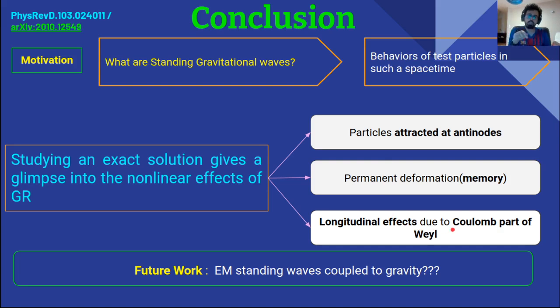In future work we would like to study how electromagnetic standing waves are coupled to gravity and how test masses would behave in such a spacetime. Obviously, for this spacetime which we studied is actually a toy model, but it gives you a glimpse into what the nonlinear effects might be when you are studying standing gravitational waves. There might be attraction of particles at the antinode, there might be memory effect, there would be longitudinal effects which would be due to some part of the Weyl. So I end here.